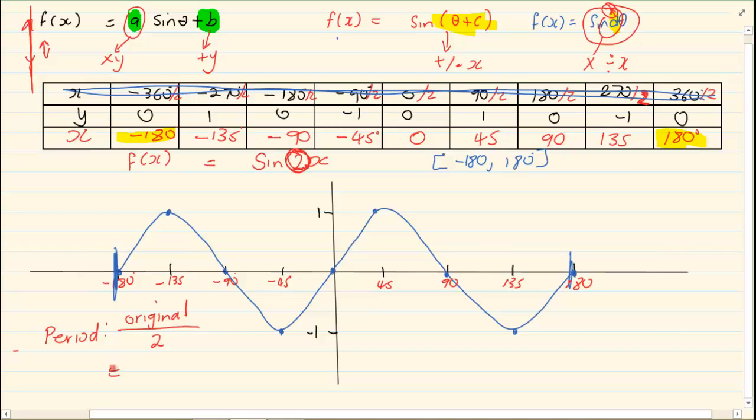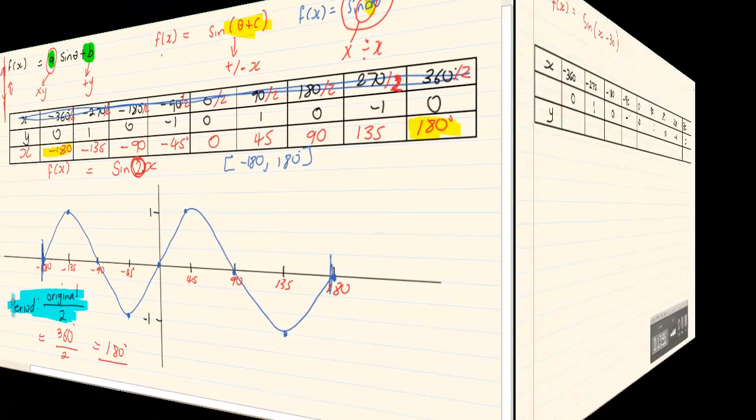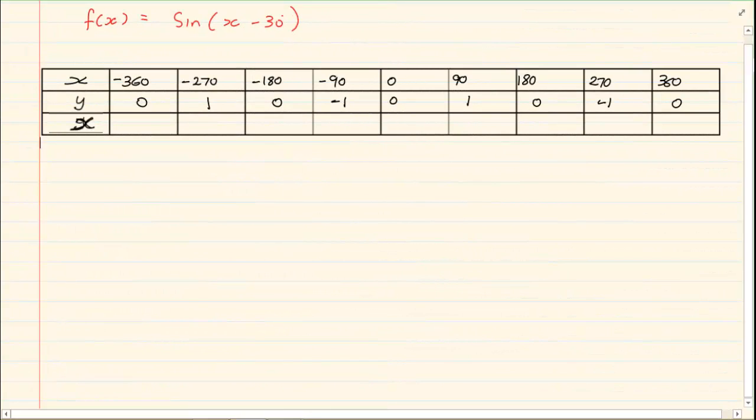Now in this one, your original is 360 degrees. I'm going to divide it by 2, which means my period is 180 degrees. Now maximum and minimum is still the same. Domain and range is still the same. So the main thing that you change is your period. Your amplitude is still the same. But the thing that changes in grade 11 is your period.